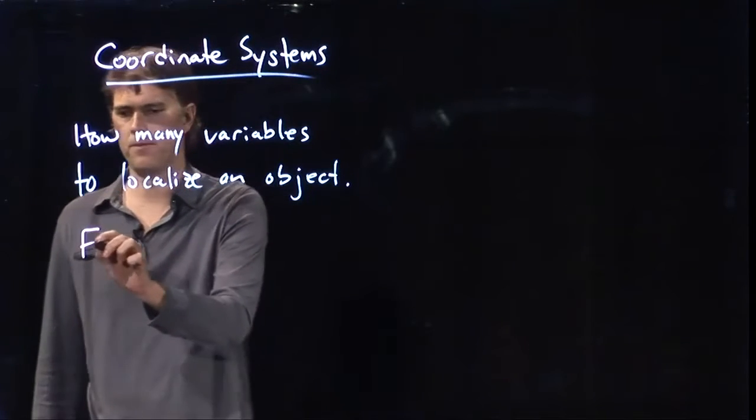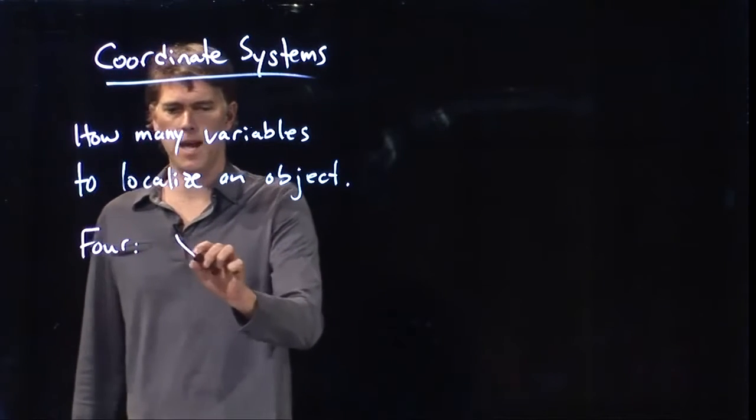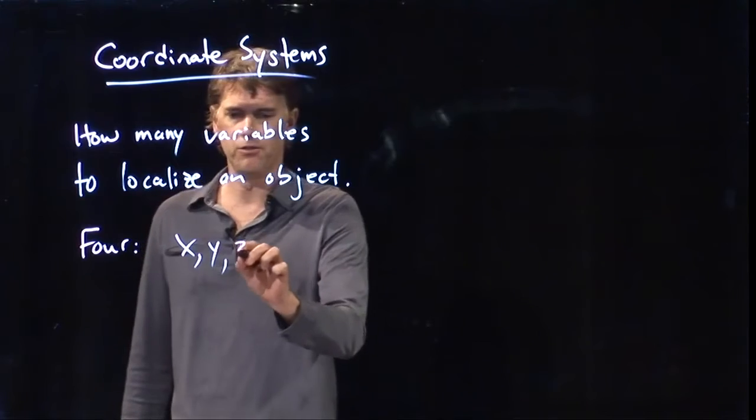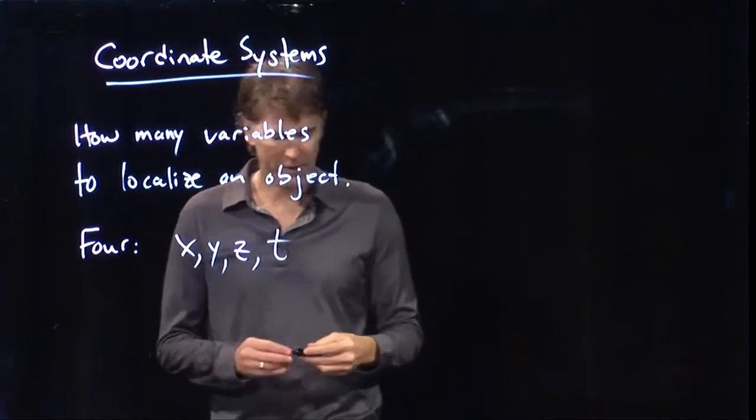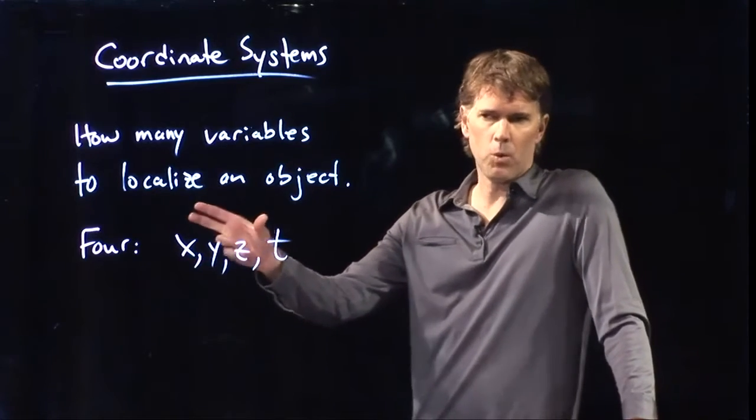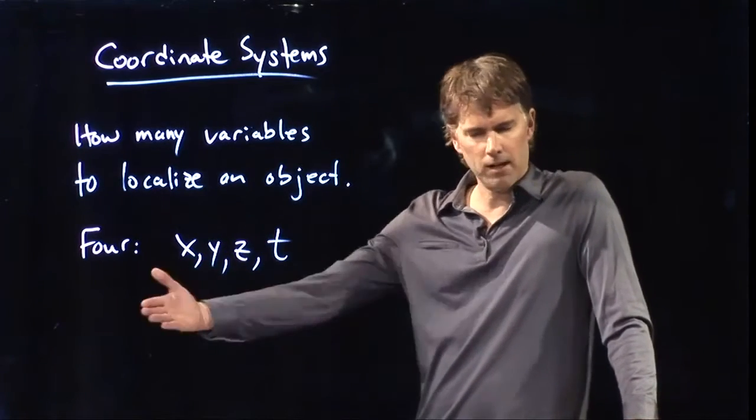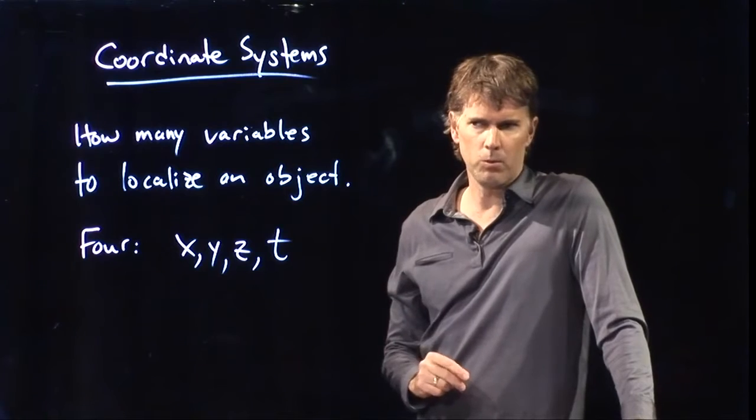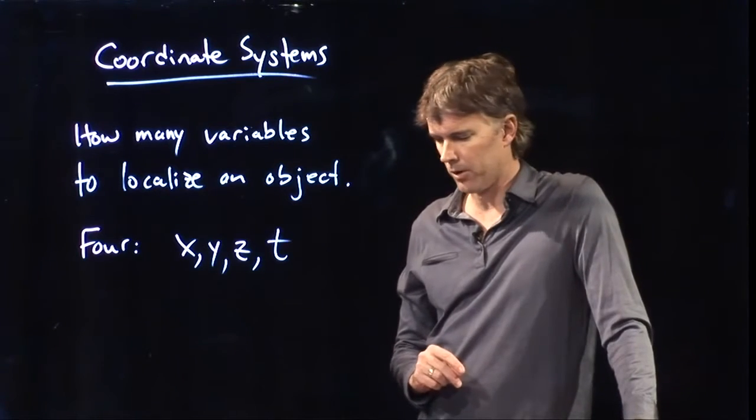Four. We need x, y, z, and time. If the object's moving along, x, y, z tells where it is in coordinate space. T tells us, as time progresses, where it is in that coordinate space.